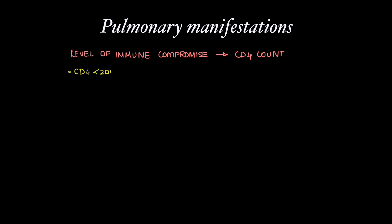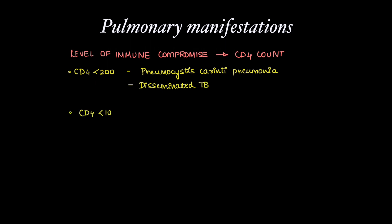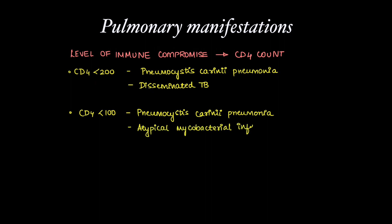When CD4 count is less than 200, there can be Pneumocystis carinii pneumonia, which we will discuss in detail, and disseminated tuberculosis. CD4 count less than 200 also causes atypical mycobacterial infections, cytomegalovirus, Kaposi sarcoma, and lymphoma.